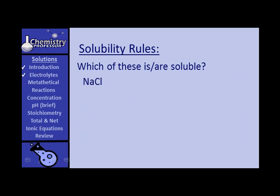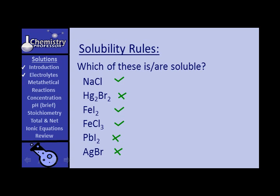Now, which of these are soluble? Sodium chloride — it is an alkali metal compound, so yes, it's soluble. Mercurous bromide — that's one of the exceptions; it is not soluble. Ferrous iodide (iron(II) iodide) — all iodides are soluble, so yes, ferrous iodide is soluble. Ferric chloride — same reason, soluble. Lead(II) iodide (plumbous iodide) — that is one of those exceptions; it is not soluble. Silver bromide — another exception; it is not soluble.